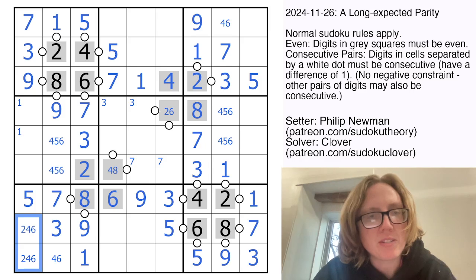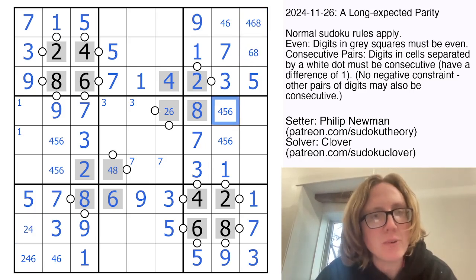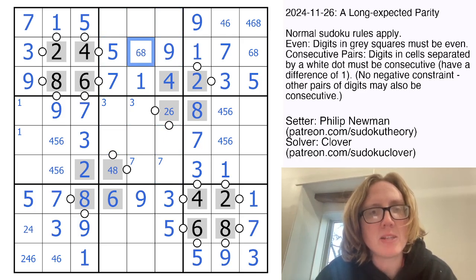These are now going to be 2, 4, 6, and these are now going to be 4, 6, 8. And that's not a 4. 9 in this region can only go in this position. So this has to be either 6 or 8, and we can't disambiguate that yet.